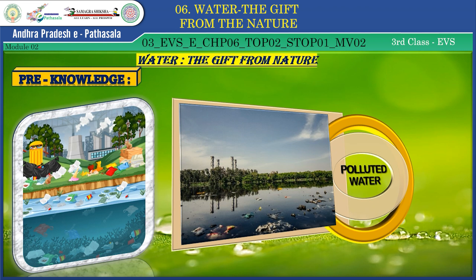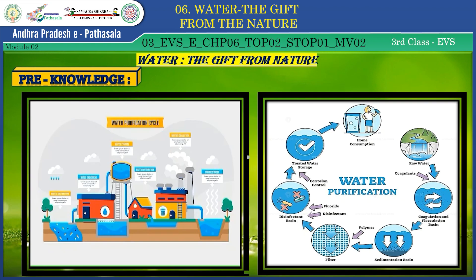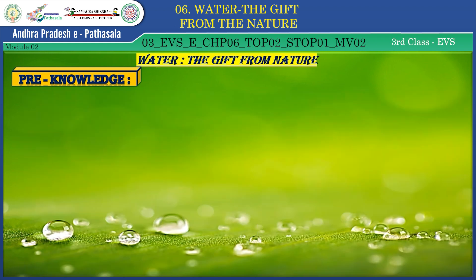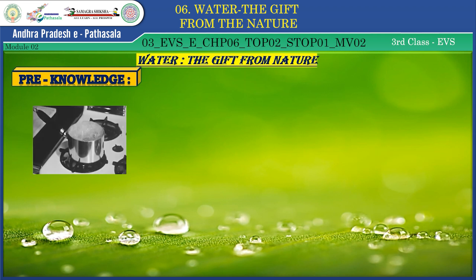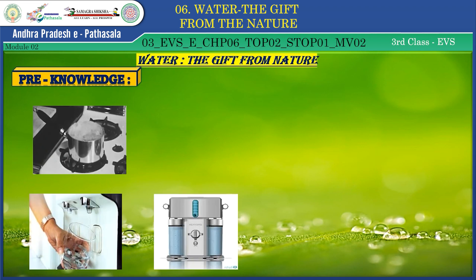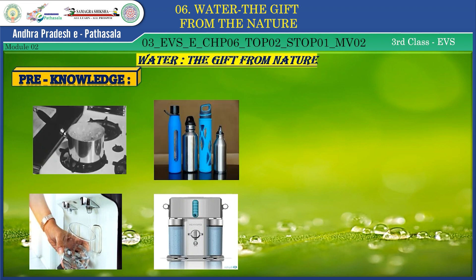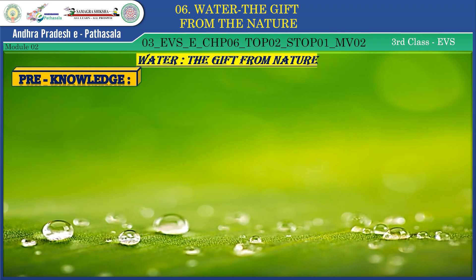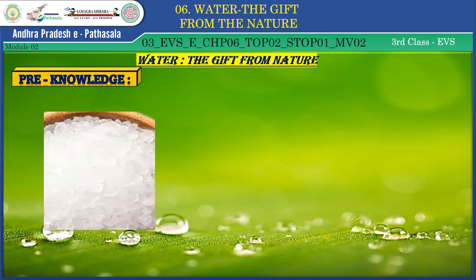Let us recall those precautions. The government is providing a safe water scheme in villages and towns — water is purified and comes to our houses. But in our houses also, we have to follow some steps. We know we should boil water and cool it before drinking. We can also purify water using water filters and purifiers. Water should be stored in clean, closed containers. We should clean water bottles frequently using salt, warm water and a bottle brush, because disease-causing germs may develop in the bottle.